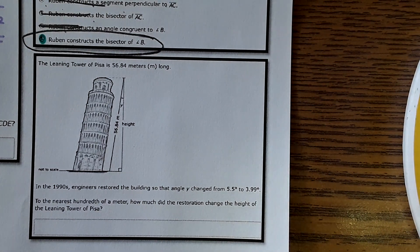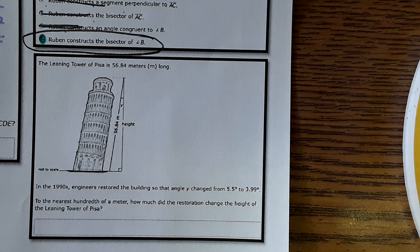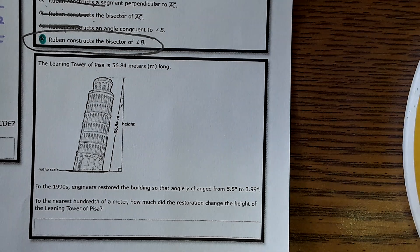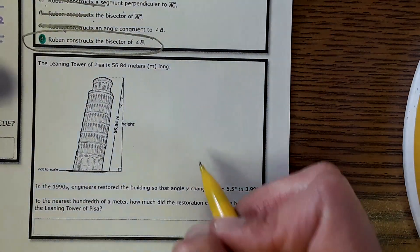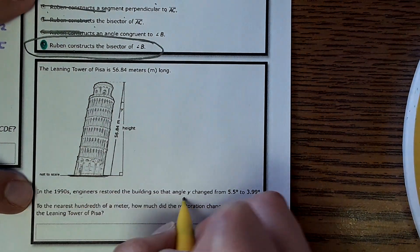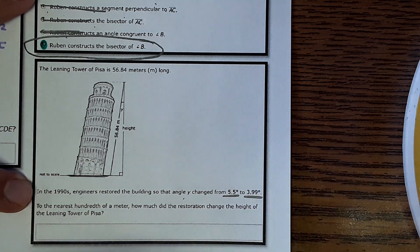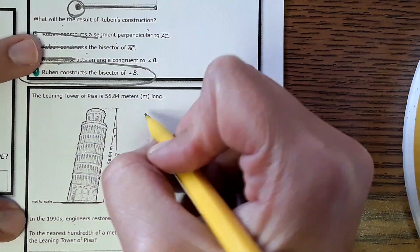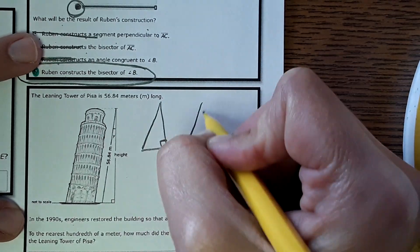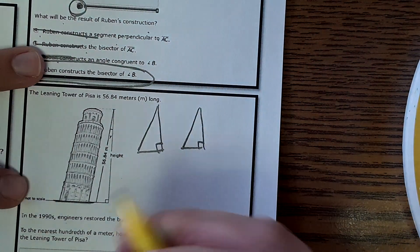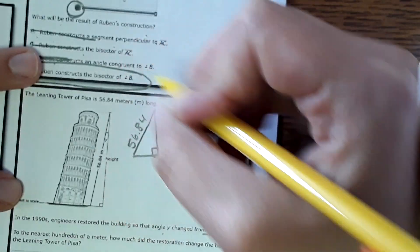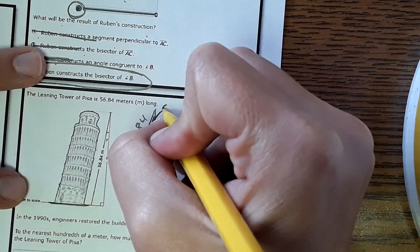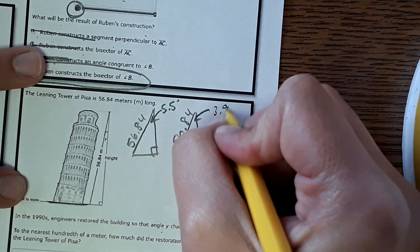Okay, leaning tower of Pisa, we've seen this question before. But just like in sports, you wouldn't just practice a play or a specific type of kick one time. You'd practice it over and over to get good at it. So that's what we're going to do here. We're going to practice it again just to get even more familiar and good at solving this problem. It says that the engineers restored this building, so the angle changed from 5.5 to 3.99 degrees. To the nearest hundredth, how much did the restoration change the height of the Leaning Tower of Pisa? Okay, so we're going to draw two right triangles. For both of these, the side of the building is 56.84. And then the angle changed from 5.5 degrees to 3.99 degrees.